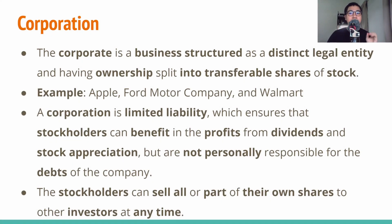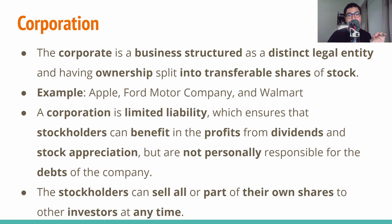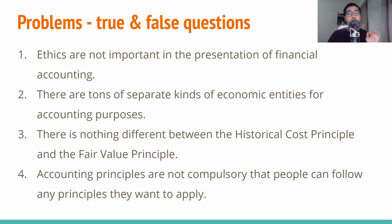The third kind of economic entity is a corporation. This kind differs from partnership and proprietorship — the corporation is a business structured as a distinct legal entity with ownership divided into transferable shares of stock, for example Apple and Walmart. The corporation's owners, or stockholders, enjoy limited liability, meaning they can sell all or part of their ownership shares to anyone at any time. However, they are not personally responsible for the debts of the company. So we are done with the theory part.